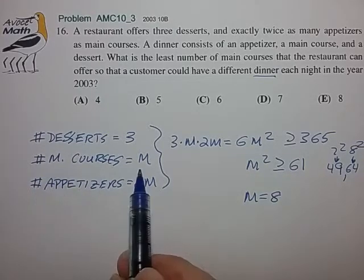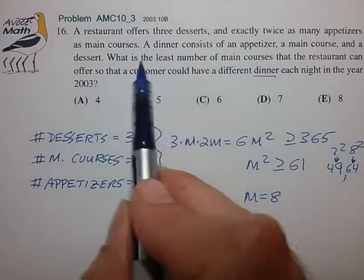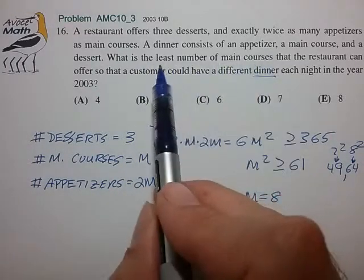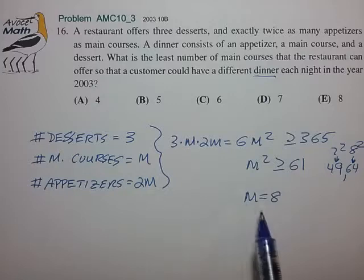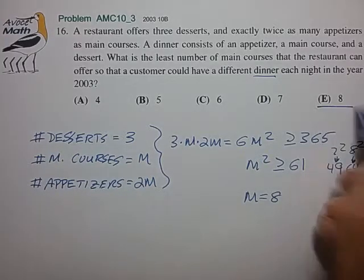And M is the number of main courses. And I think that's exactly what the statement calls for. What is the least number of main courses? M is equal to 8. That is choice E, 8.